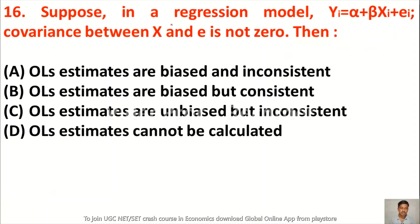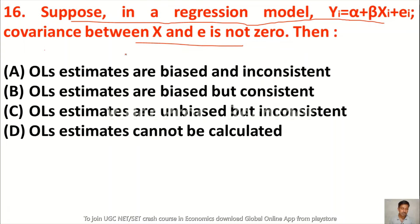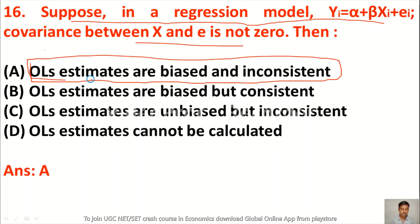Question 16: Suppose in a regression model Yi = α + βXi + Ei, the covariance between X and E is not zero. Then — option A OLS estimates are biased and inconsistent, option B OLS estimates are biased but consistent, option C OLS estimates are unbiased but inconsistent, option D OLS estimates cannot be calculated. The right answer is option A — OLS estimates are biased and inconsistent.